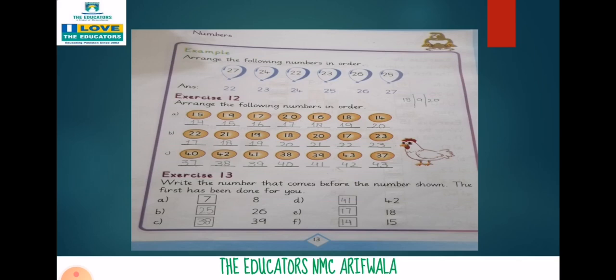Now we will solve Exercise number 12: Arrange the following numbers in order — fifteen, nineteen, seventeen, twenty, sixteen, eighteen, and fourteen. The smallest number is fourteen, then fifteen, sixteen, seventeen, eighteen, nineteen, and twenty.